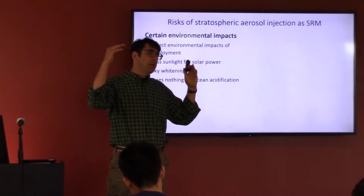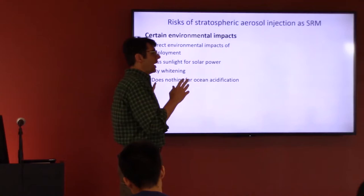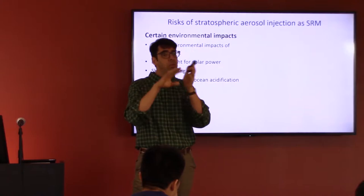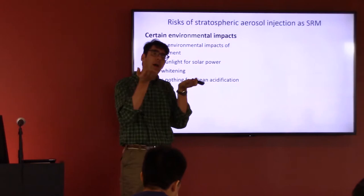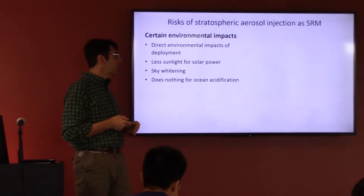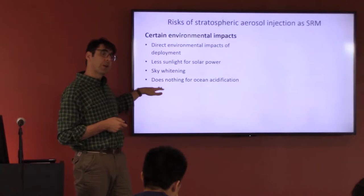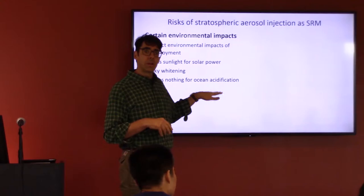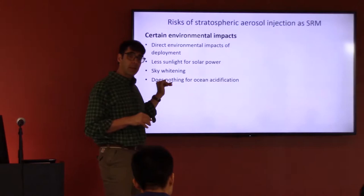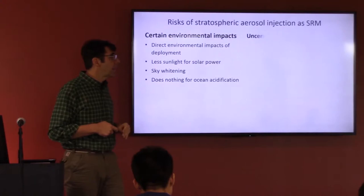People are talking about engineering nanoparticles that would be light on one side and dark on the other, so they would only reflect upward. SRM does nothing for other side effects of greenhouse gases like ocean acidification. Ocean acidification is a direct result of carbon dioxide in the atmosphere — this isn't removing CO2, so acidification would continue. If the ocean weren't warmed as much it might be slightly mitigated, but most of the cause is direct CO2.